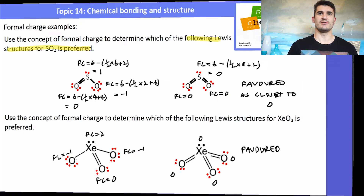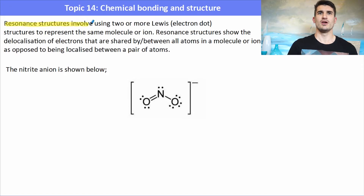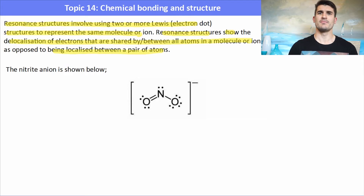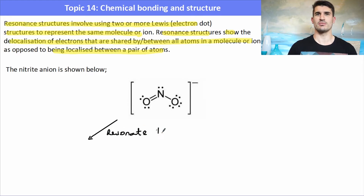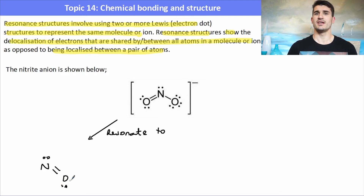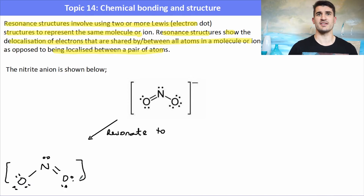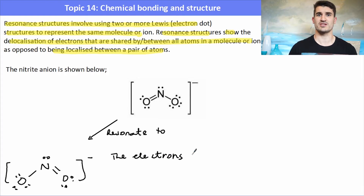A resonance structure involves using two or more Lewis structures to represent the same molecule or ion. Resonance structures show the delocalization of electrons — that is, electrons that are shared between all of the atoms in the molecule or ion, as opposed to being isolated between two atoms. A delocalized electron can move between bonds and atoms, whereas a localized electron is stuck in a particular covalent bond. For example, the nitrite anion has a resonance structure — just imagine the double bond flipping from the oxygen on the right to the oxygen on the left. The structure hasn't changed; all that's happened is it has resonated — the electrons in the double bond have moved to the other side of the nitrogen.